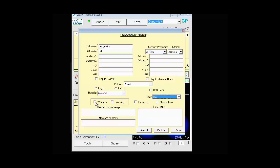This is also where you specify if you want to warranty the lens or if it's an exchange. If it is an exchange, you'll need to enter a reason that it is an exchange. And on the bottom, we have Message to WAVE. If you want to send a specific message to the WAVE office with this lens order, enter it here.